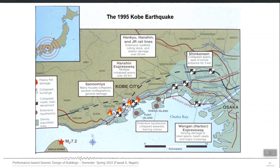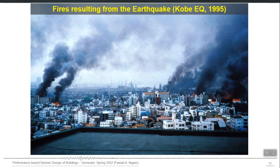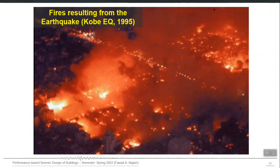The 1995 Kobe earthquake — I think I have shown this figure earlier also. These points are where earthquake-induced fires started. Earthquakes can induce fires in industrial buildings, power plants, and other kinds of structures. You can see these fires were triggered by the earthquake in Kobe 1995.